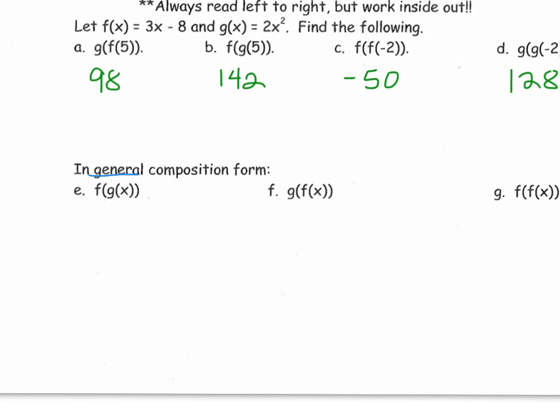f of g of x. So by definition, we evaluate that inside function first. g of x. If you look back up above, remember g of x equals 2x squared. That's the output for g of x. By definition for the composite function, that becomes the input for f of x.